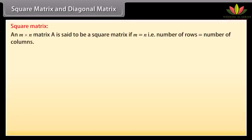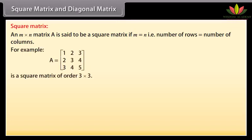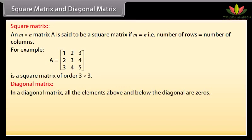Square matrix and diagonal matrix. Square matrix: an M by N matrix A is said to be a square matrix if M is equal to N, that is, the number of rows equals the number of columns. For example, A is a square matrix of order 3 by 3. Diagonal matrix: in a diagonal matrix, all the elements above and below the diagonal are zeros. For example, B is a diagonal matrix.